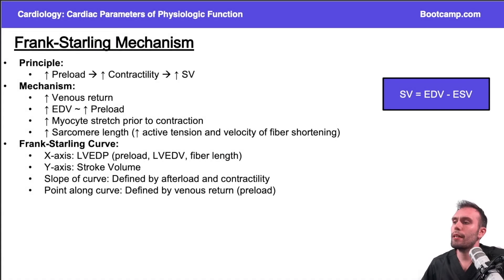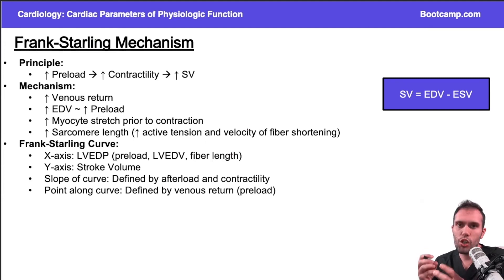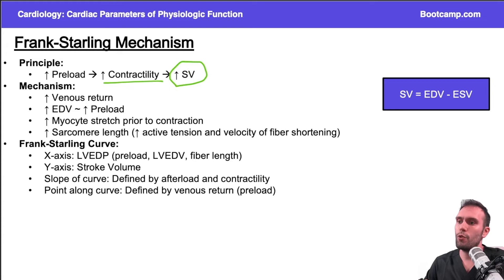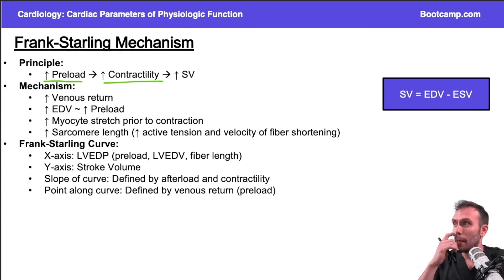The Frank-Starling mechanism is essentially looking at the heart's ability to change its force of contractility and therefore the stroke volume, because contractility will influence the stroke volume, and this is all based on the preload.